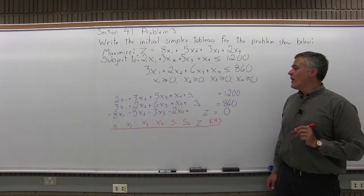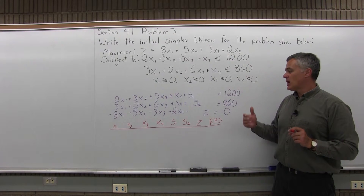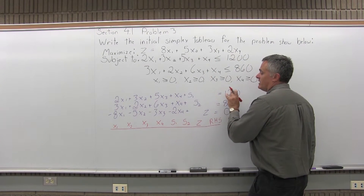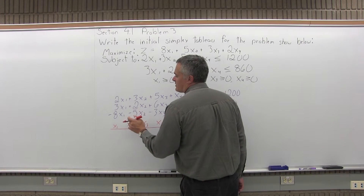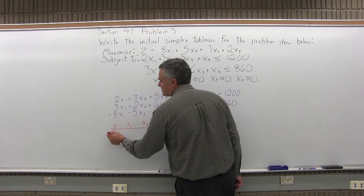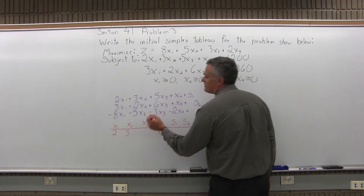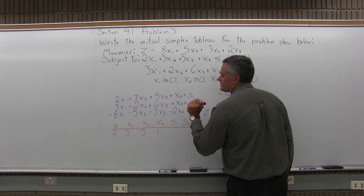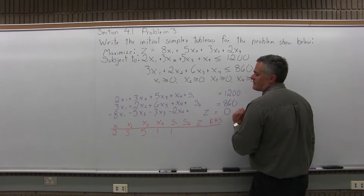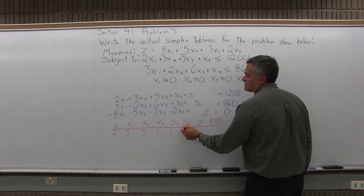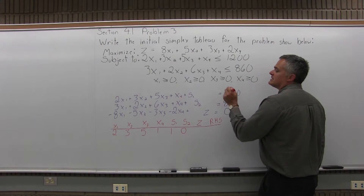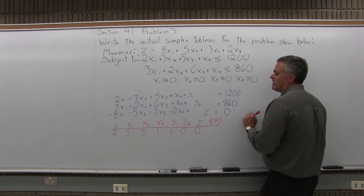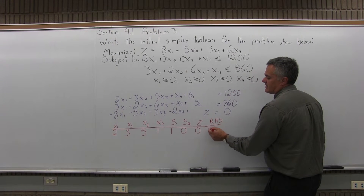The top equation, 2x1 plus 3x2 plus 5x3 plus x4 plus S1 equals 1,200, becomes the top row of the matrix without the variables. The 2x1 puts a 2 in the x1 column, 3x2 puts a 3 in x2, 5x3 puts a 5 in x3, 1x4 puts a 1 in x4, and 1s1 puts a 1 in s1. The top equation has no s2, so I put a 0 there; no z, so a 0 in the z column; and 1,200 in the RHS column.